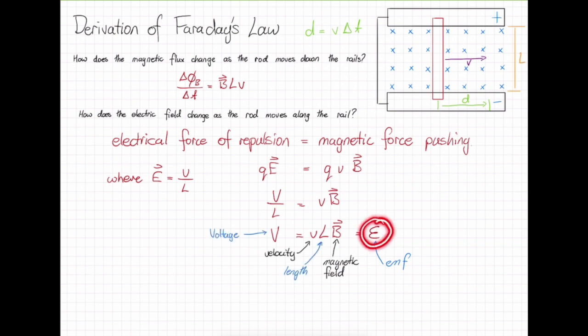As our definition of EMF is equal to the velocity by the length by the magnetic field is the same as our derivation of the change in magnetic flux, our EMF must then be equal to our change in magnetic flux.